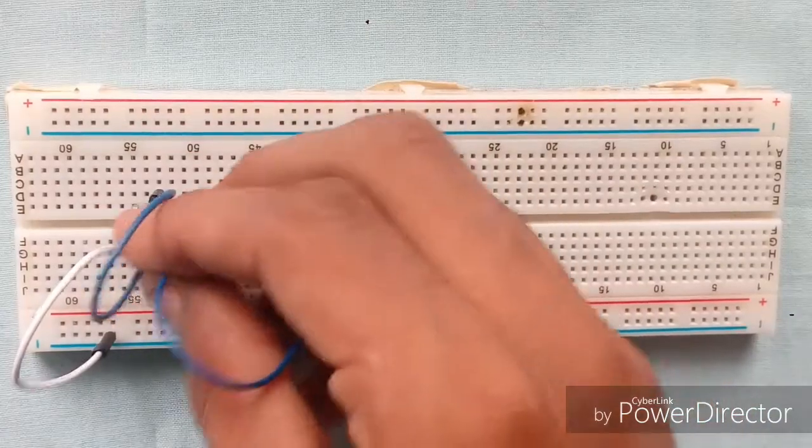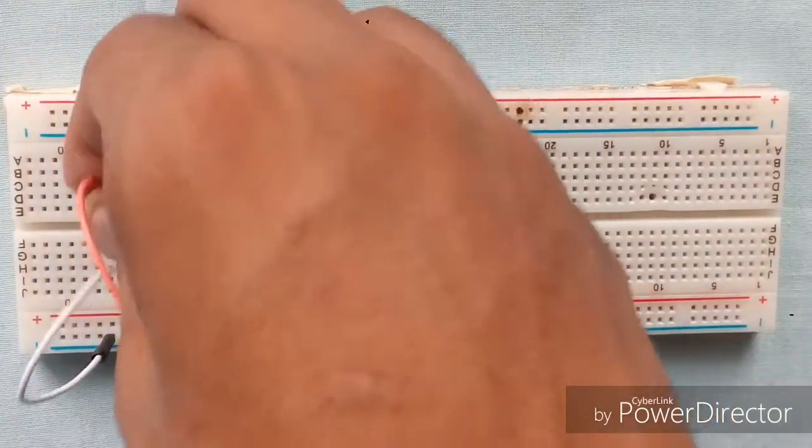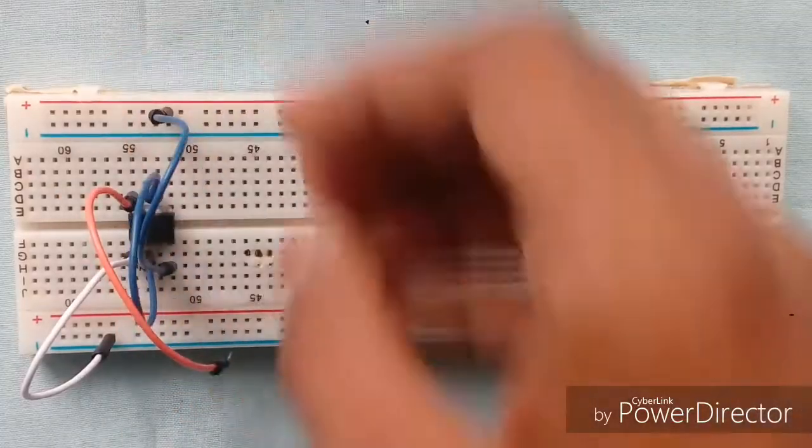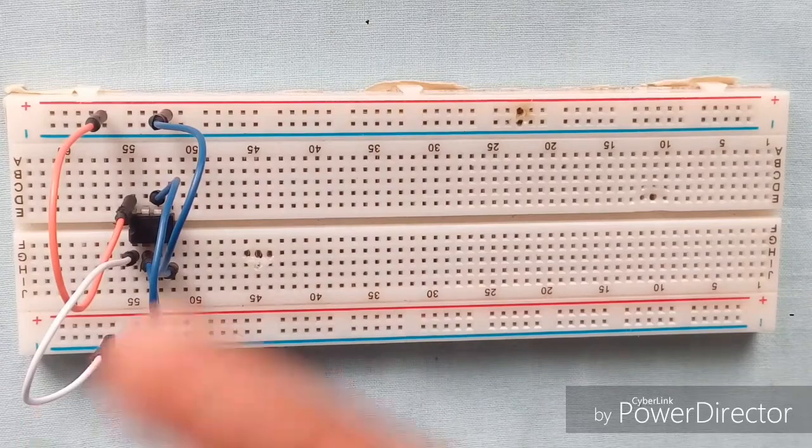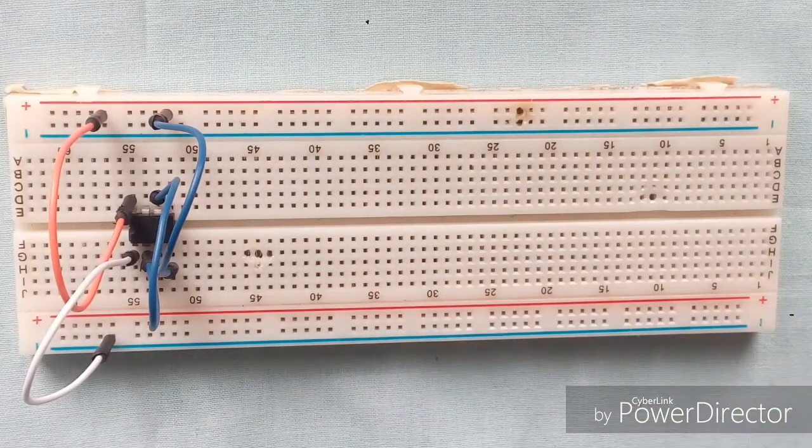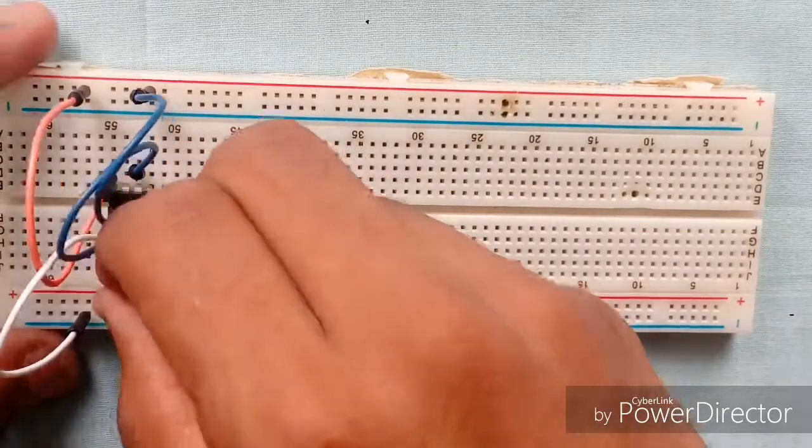Connect pin 4 and pin 8 of the IC to the positive rail. Now connect a 47k resistor between pin 2 and pin 3 of the IC, as you can see.